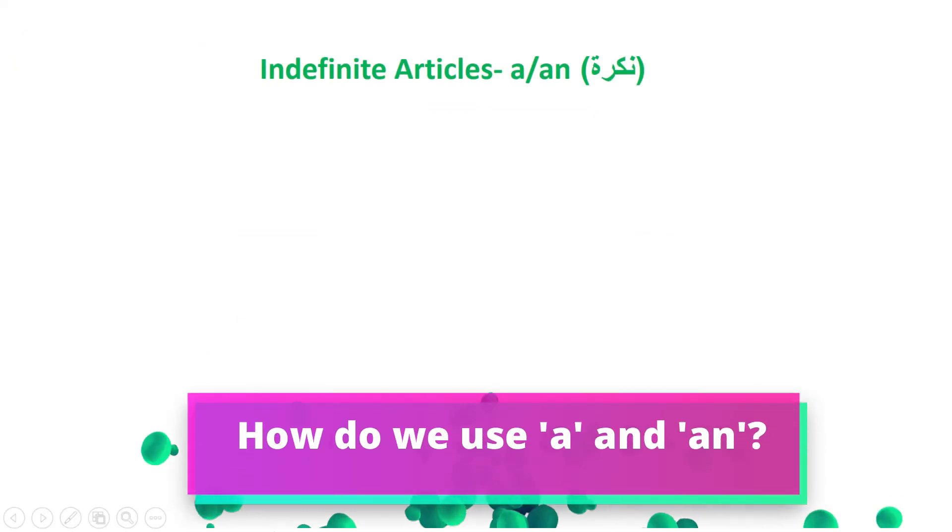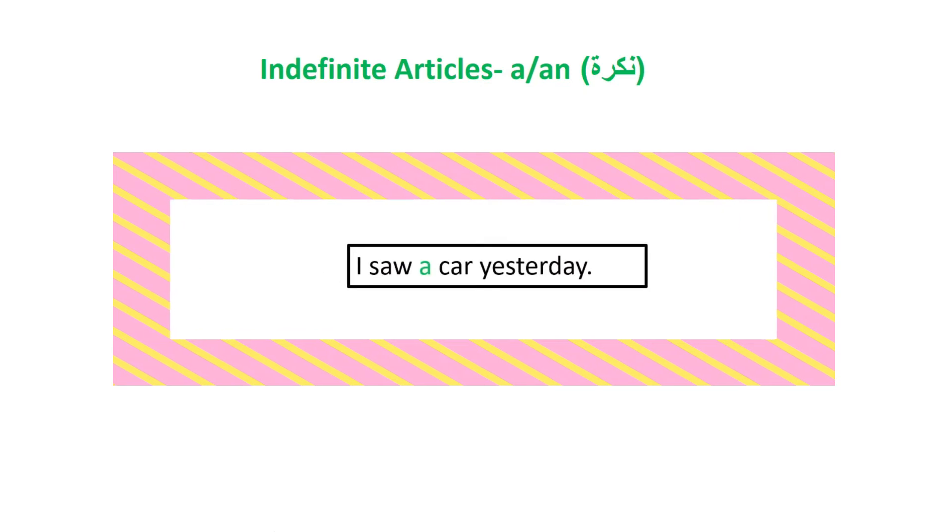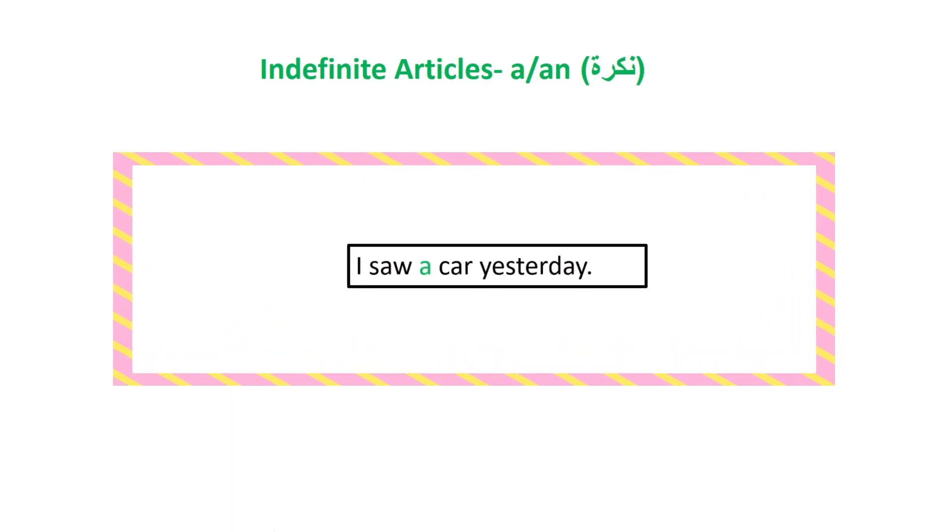Indefinite articles 'a' and 'an' are used before nouns that introduce something or someone you have not mentioned before. For example, 'I saw a car yesterday.' 'A' is an indefinite article because this has not been mentioned before, especially as it's the first sentence we're mentioning.